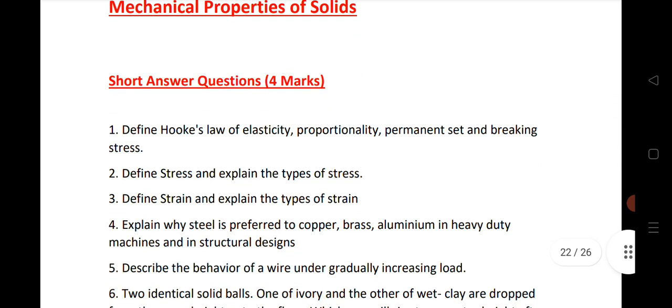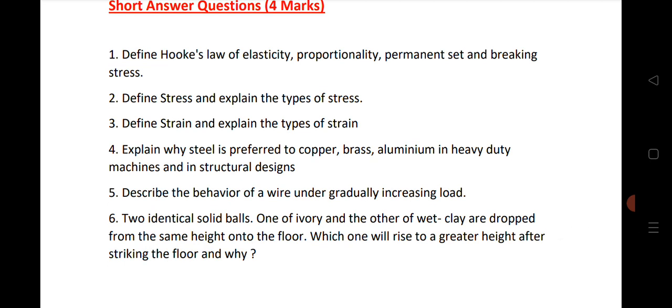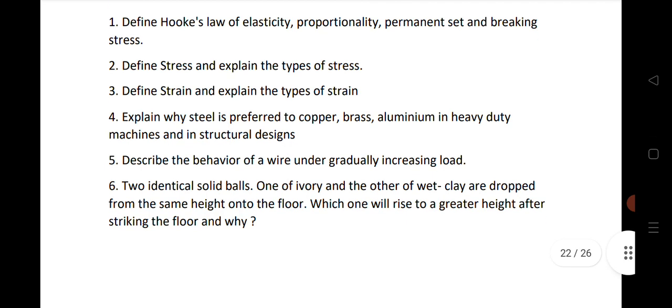Mechanical Properties - four marks chapter. I have given six very important SAQs from this chapter, you can note it down: Hooke's law, stress, strain, why steel is preferred to copper, brass, aluminum in heavy duty machines and in structural design, behavior of a wire under gradually increasing load. Very important questions - six questions I have given here.